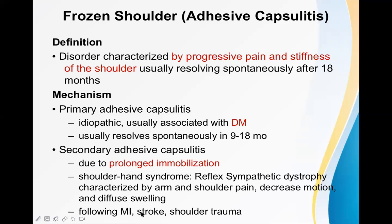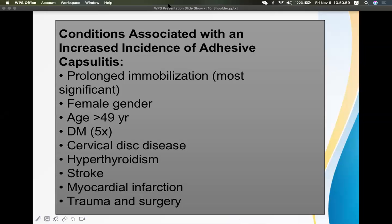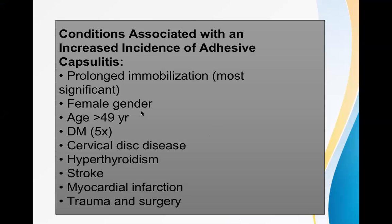Secondary frozen shoulder may also occur following myocardial infarction, following stroke, and shoulder trauma. In all these cases there may be prolonged immobilization of the shoulder. Prolonged immobilization is the most significant or common cause associated with increased incidence of frozen shoulder or adhesive capsulitis.